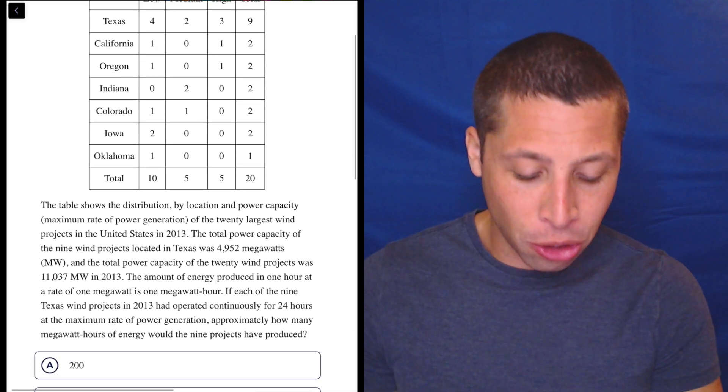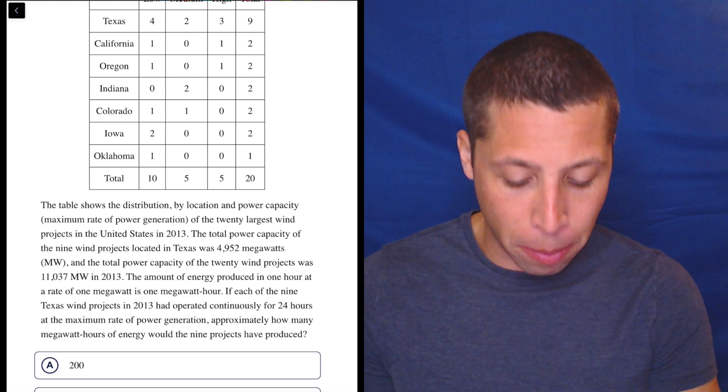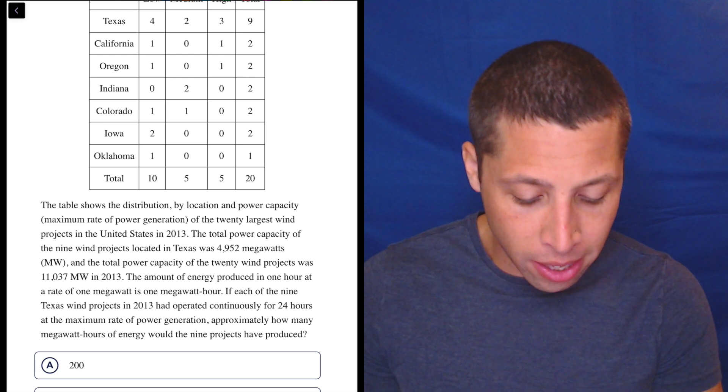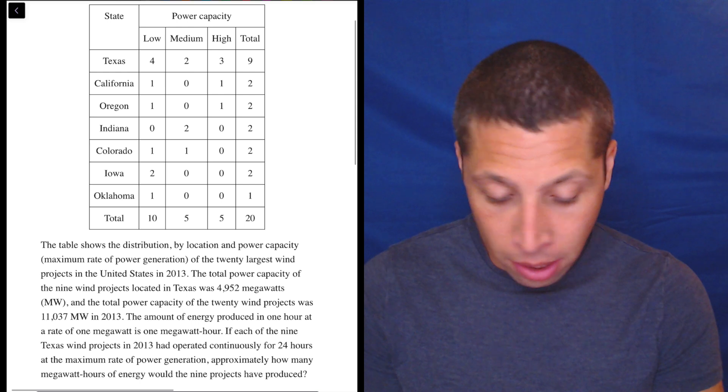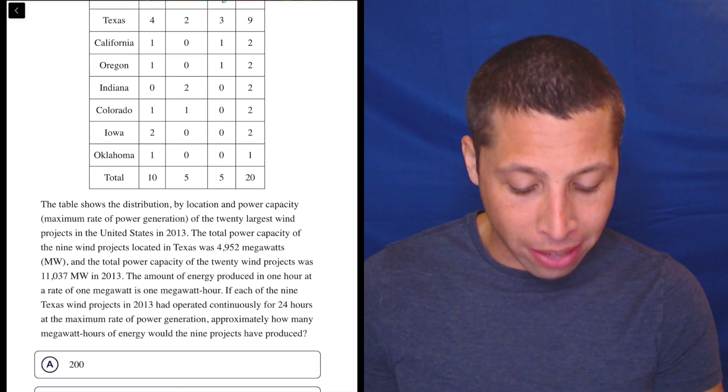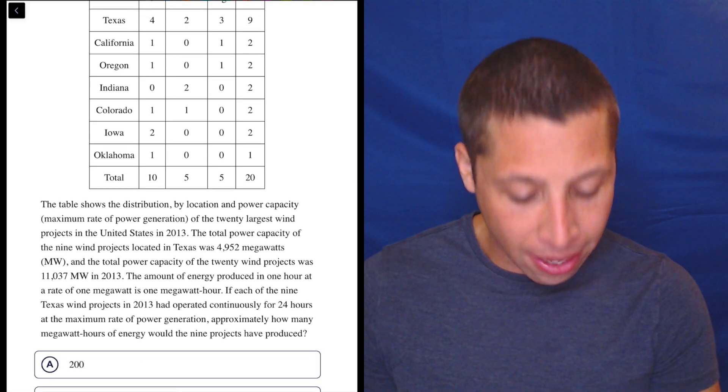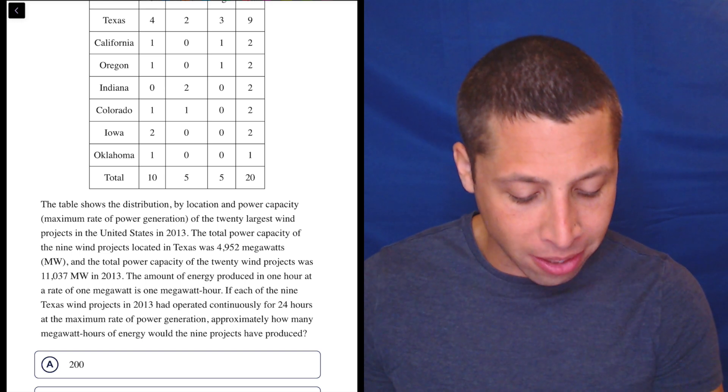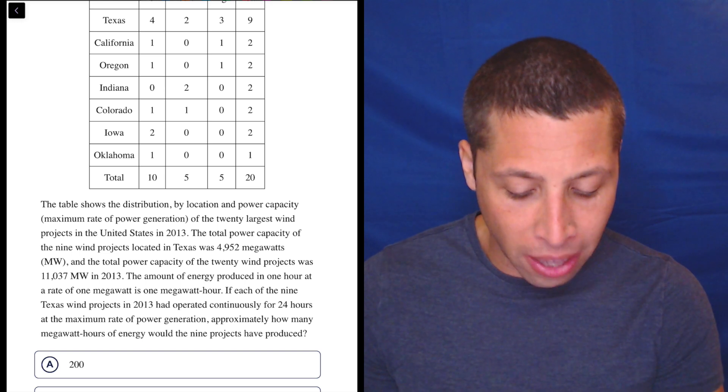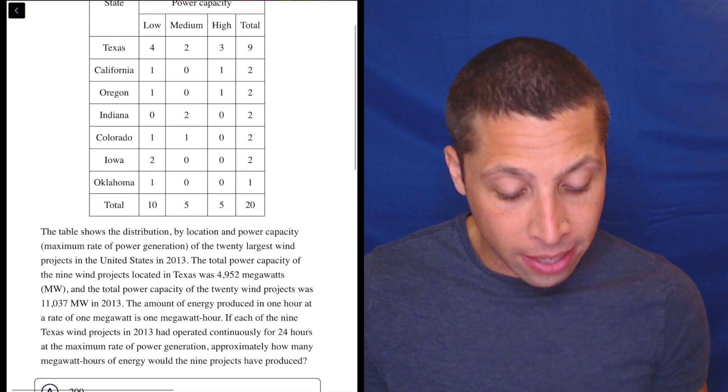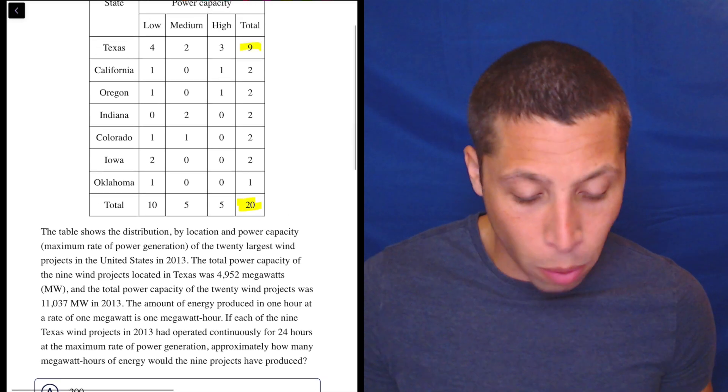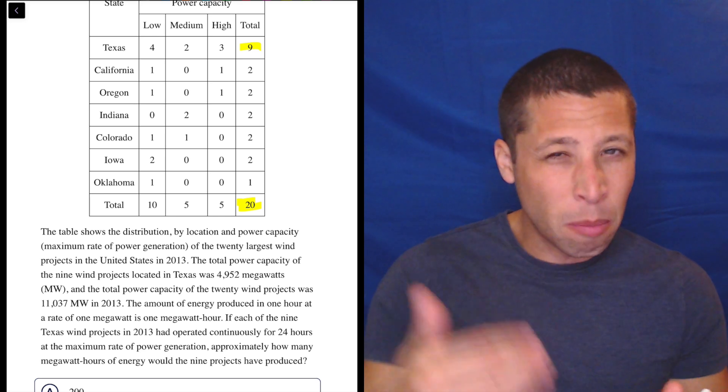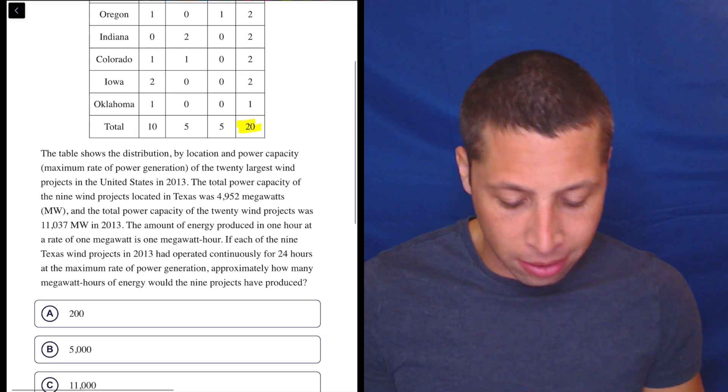So what does it say? The table shows the distribution by location and power capacity, maximum rate of power generation of the 20 largest wind projects in the United States in 2013. So just tell me what the table says. The total power capacity of the nine wind projects located in Texas was 4,952 megawatts. And the total power capacity of the 20 wind projects was 11,037 megawatts in 2013, right? So Texas has nine, total is 20. Literally again, it's kind of directed me to two parts of this, but it's going to be a little bit more information about them. Let's continue with what they say.